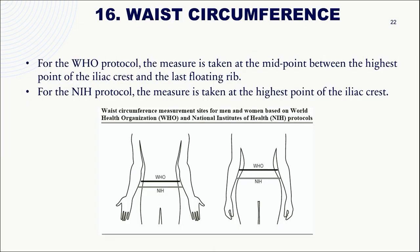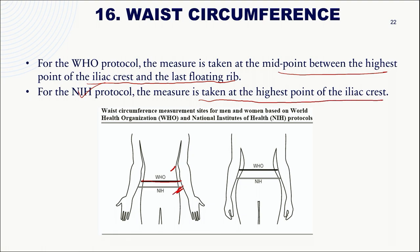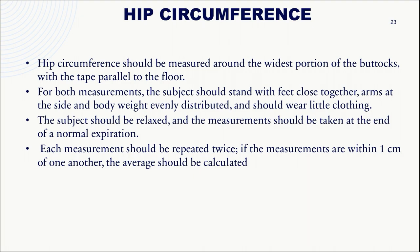Waist circumference: WHO protocol measures at the midpoint between the last floating rib and the highest point of the iliac crest. NIH protocol measures at the highest point of the iliac crest. Hip circumference is measured around the widest portion of the buttocks with the tape parallel to the floor. For both measurements, the subject should stand with feet close together, arms at the side, weight evenly distributed, wearing little clothing, relaxed, and the measurement taken at the end of normal expiration. Each measurement should be repeated twice and averaged if within 1 cm.